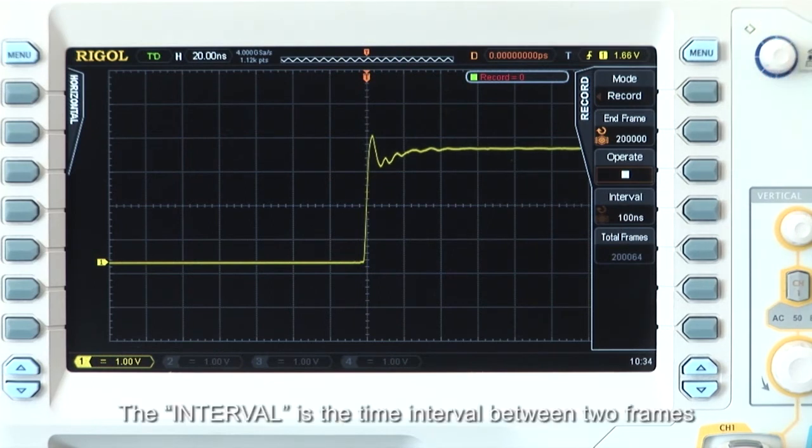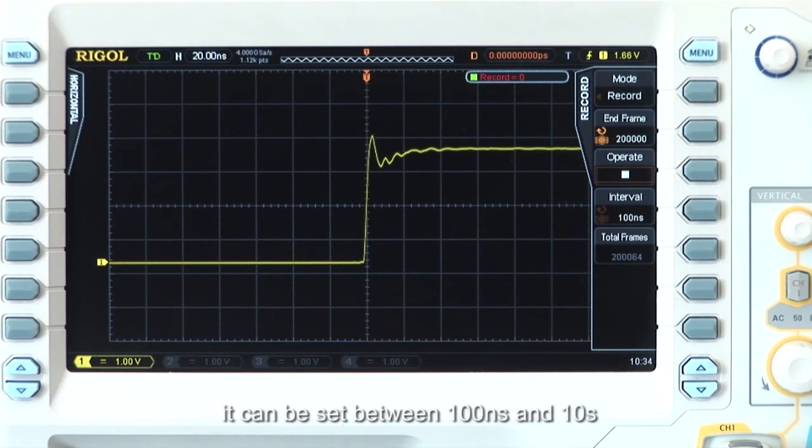The interval is the time interval between two frames. It can be set between 100 ns and 10 seconds.